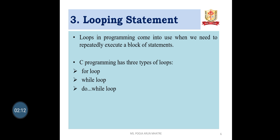Looping Statements: Loops in programming come into use when we need to repeatedly execute a block of statements. C programming has three types of loops: the for loop, the while loop, and the do-while loop.